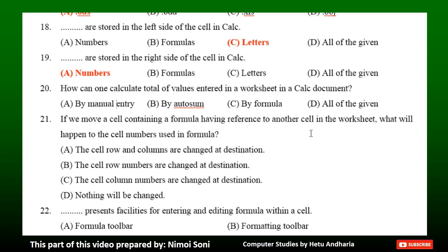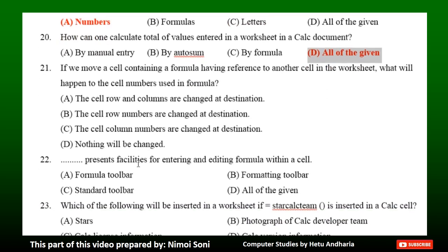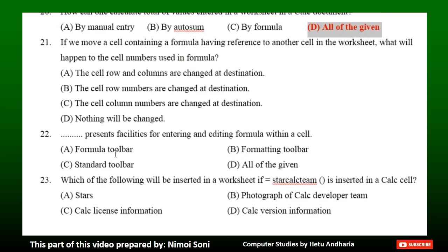Question 21: If we move a cell containing a formula having reference to another cell in the worksheet, what will happen to the cell numbers used in the formula? Option A: The cell row and columns are changed at destination. Option B: The cell row numbers are changed at destination. Option C: The cell column numbers are changed at destination. Option D: Nothing will be changed.